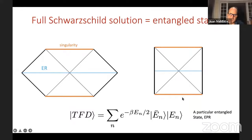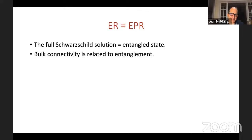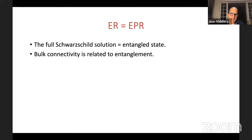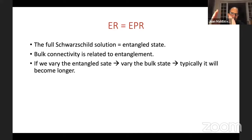This can be called ER = EPR: the Einstein-Rosen bridge wormhole is the same as the EPR correlations. The connectivity of the bulk is related to entanglement. If we vary the entangled state, the bulk state varies too. Sending in extra particles typically makes this wormhole longer, separating the left and right horizons from each other.